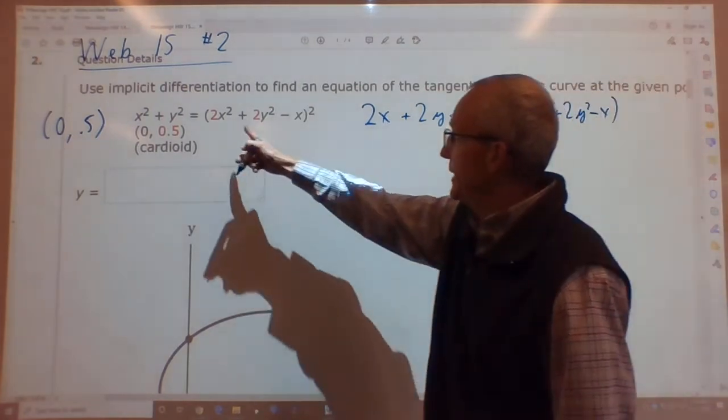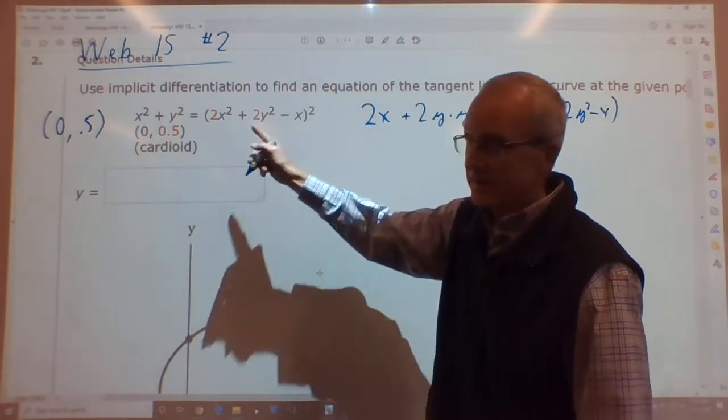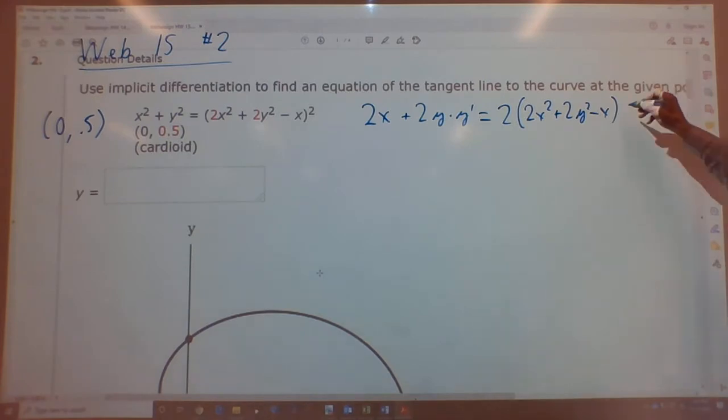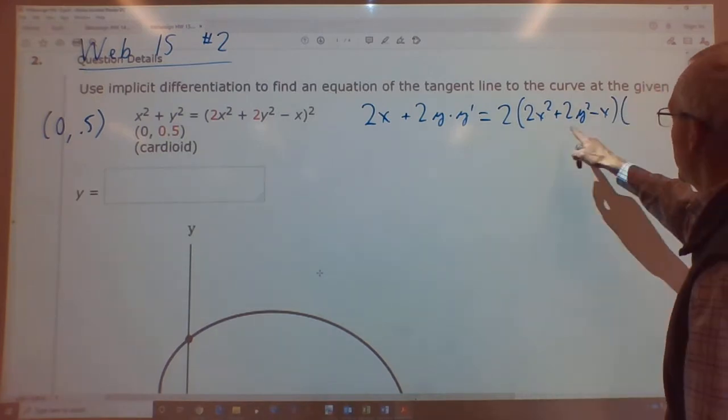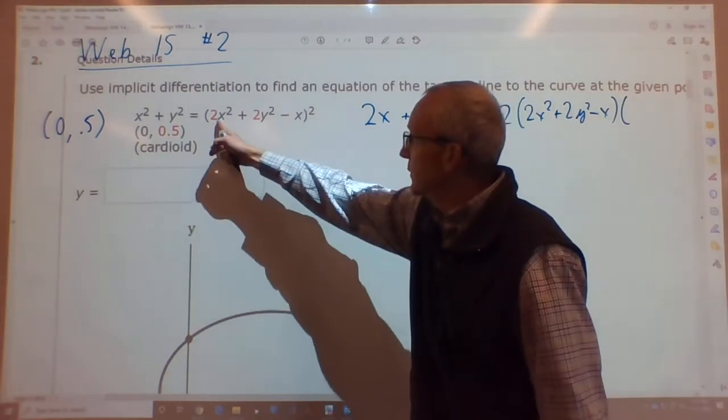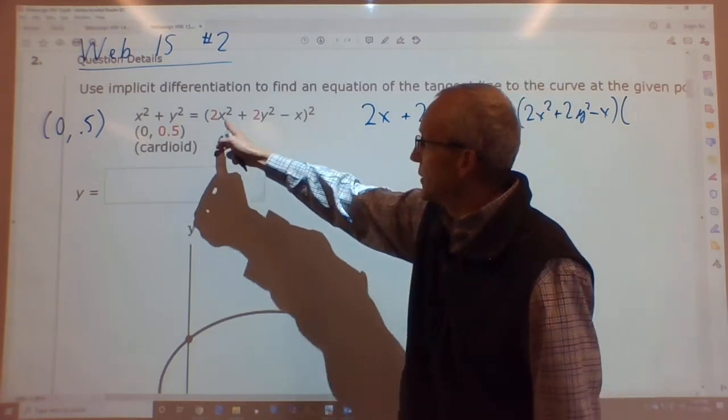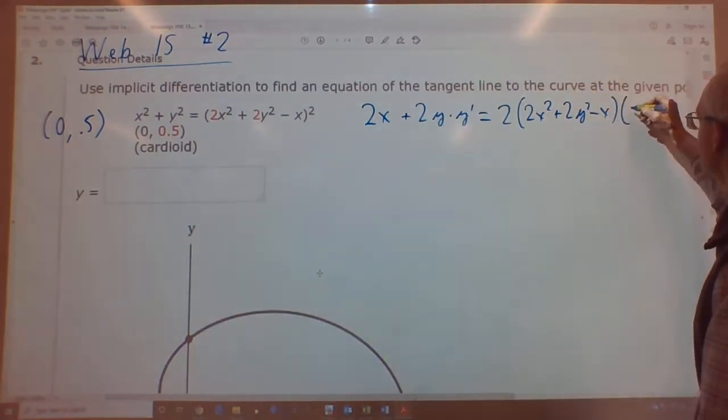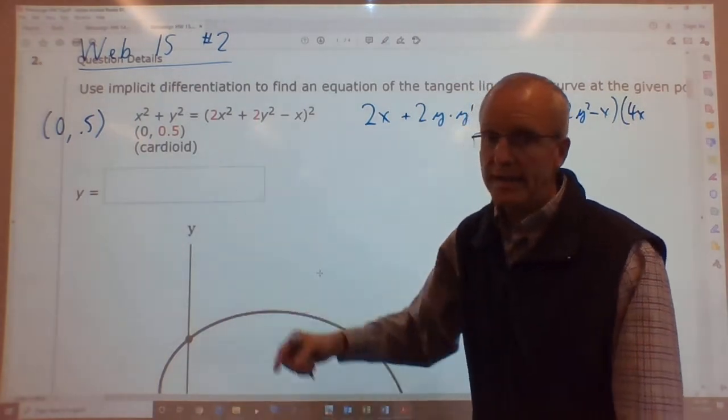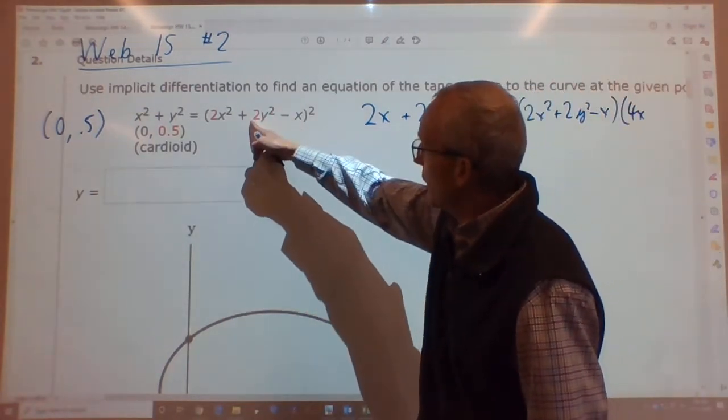There's going to be three things in that, so I'm going to put a parenthesis. It's that whole thing times the entire derivative of what's inside. It's got three parts. The derivative of 2x² is 4x.